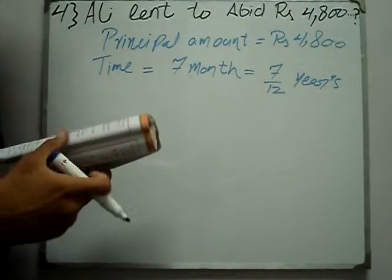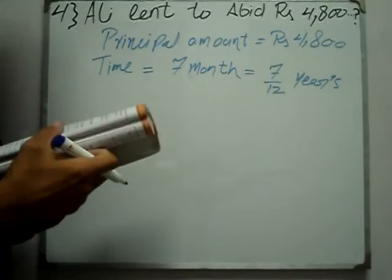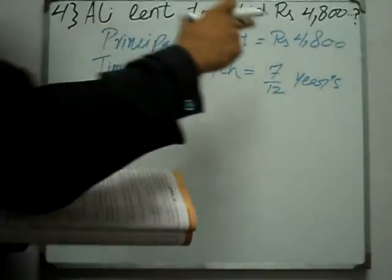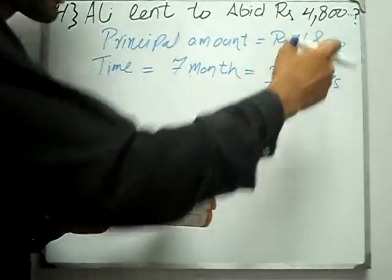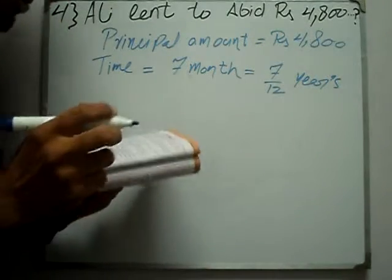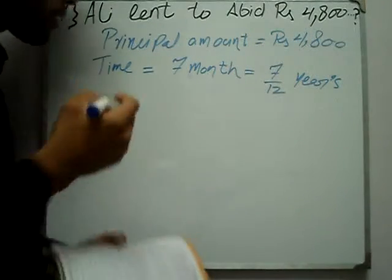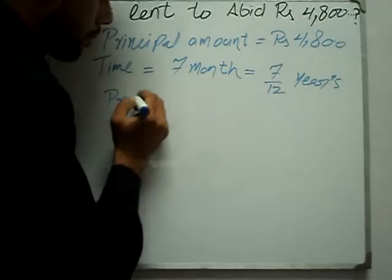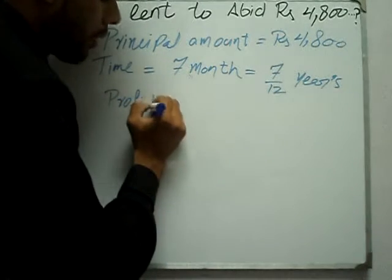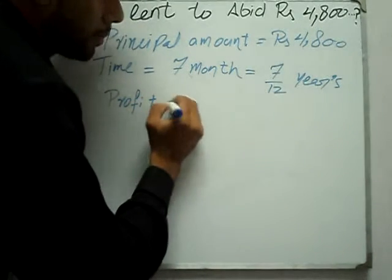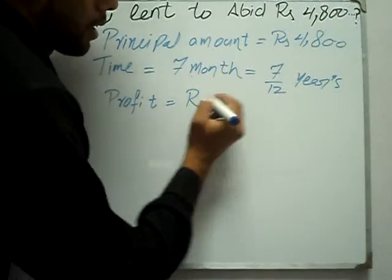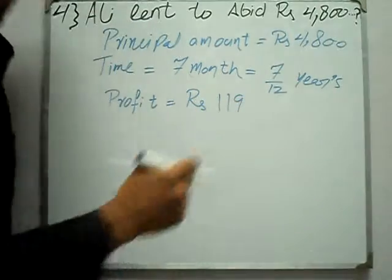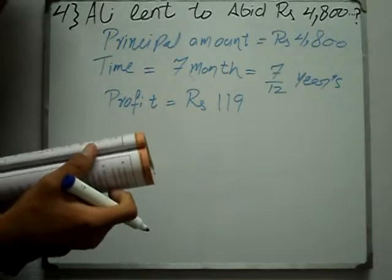7 mahino ke baad usne kitne paise dene hain? RS 4800 ke peechhe usne profit dena hai. Woh RS 119 hai.